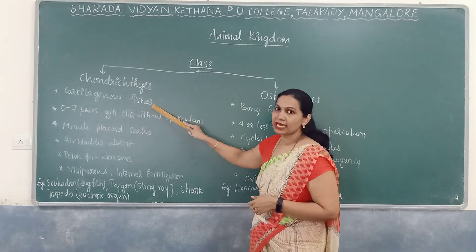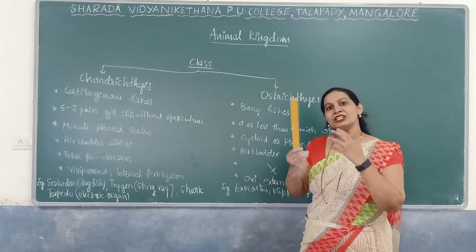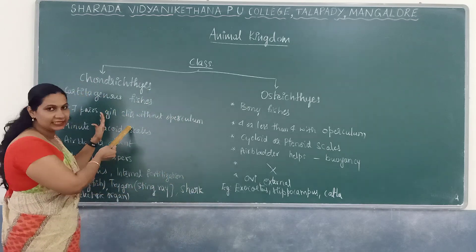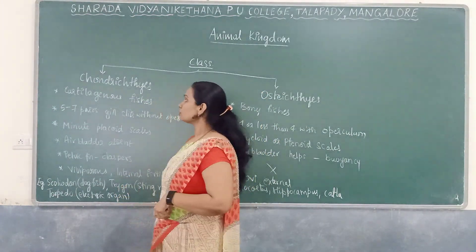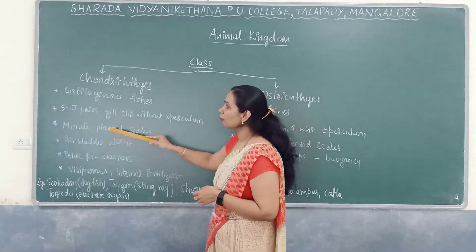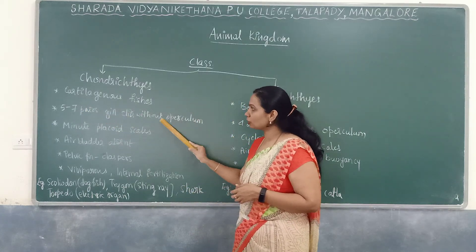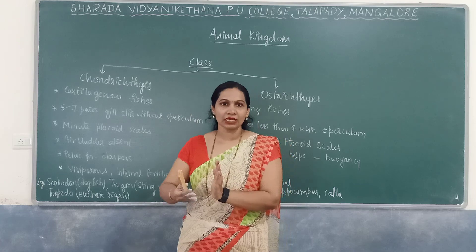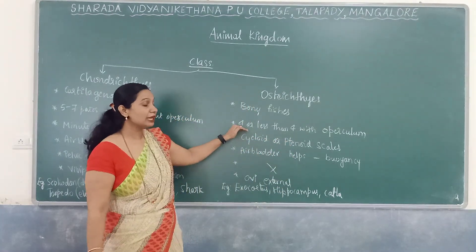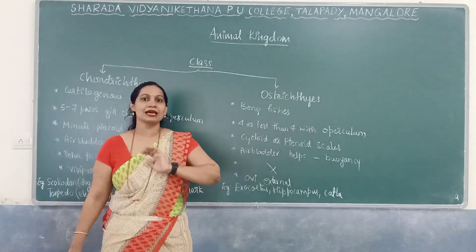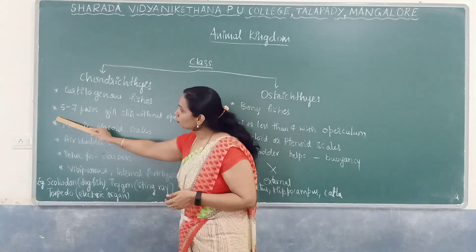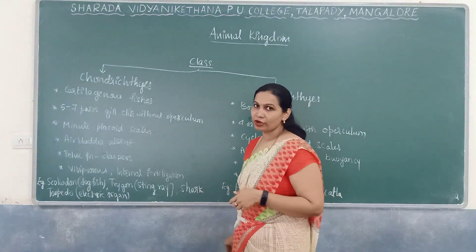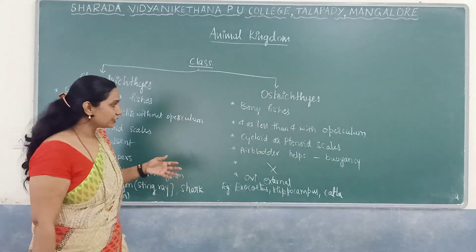Chondrichthyes have a cartilaginous endoskeleton and Osteichthyes have a bony endoskeleton. Chondrichthyes have 5 to 7 pairs of gill slits without an operculum — their gill slits are naked. Osteichthyes have 4 or fewer gill slits covered by an operculum. Chondrichthyes have minute placoid scales not visible to the naked eye, while Osteichthyes have cycloid or ctenoid scales that are visible.